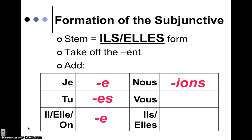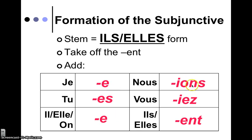Does that seem familiar? -ions, -iez, and then -ent. So this is a weird mashup — check these out. These are your regular -ER verb endings, and then these are the same as the imperfect. So we're in for a wild ride, that's for sure. But those are your endings for the subjunctive.